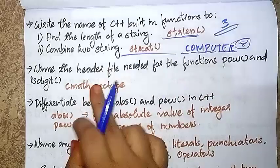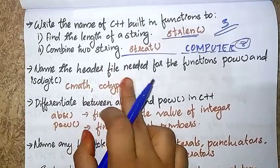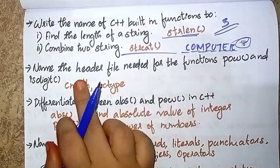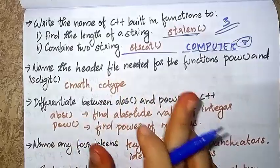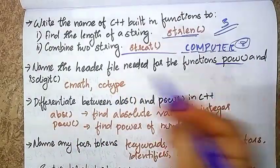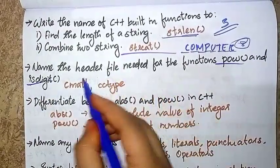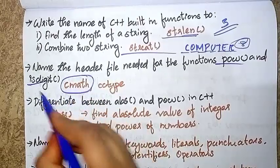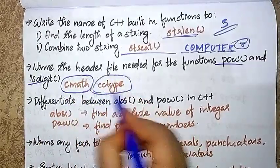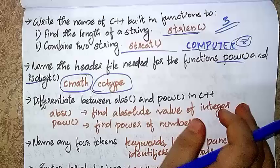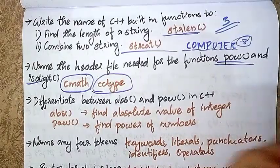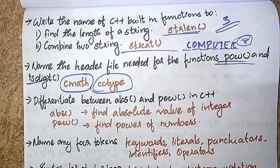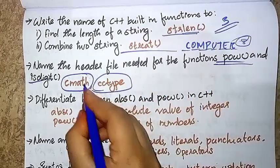The next question: What is the header file needed for the functions power and isdigit? The header file for power is cmath, and for isdigit it is cctype.